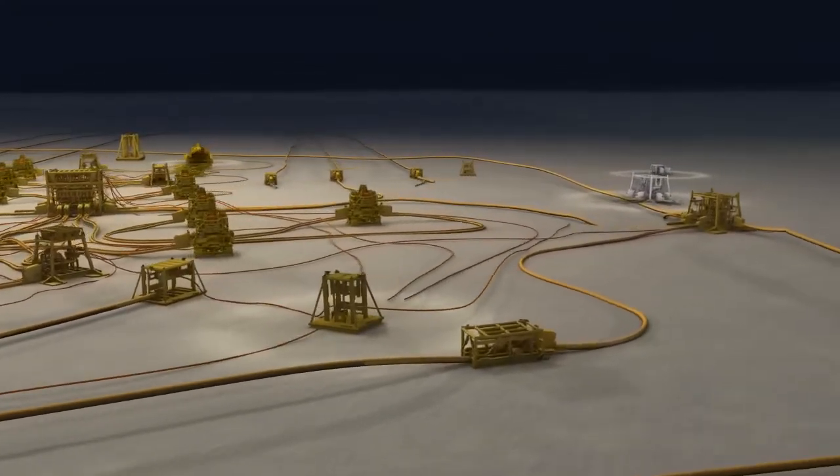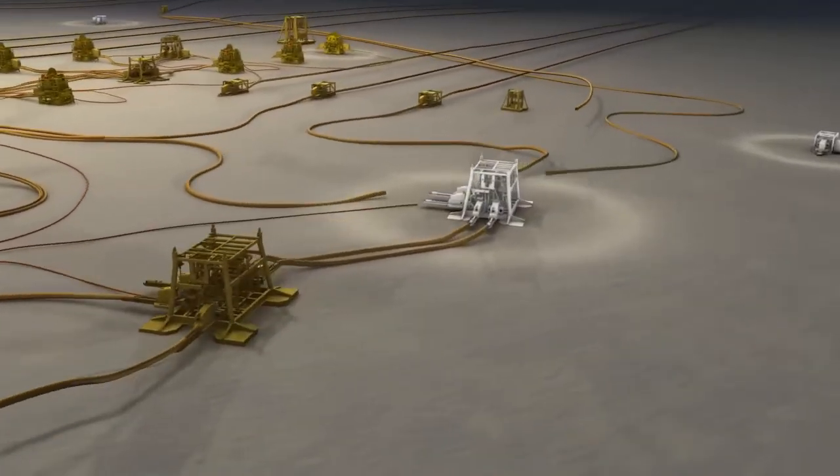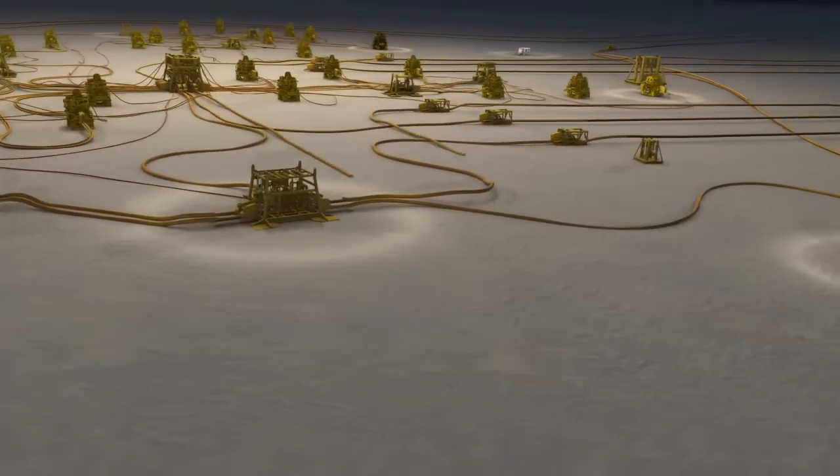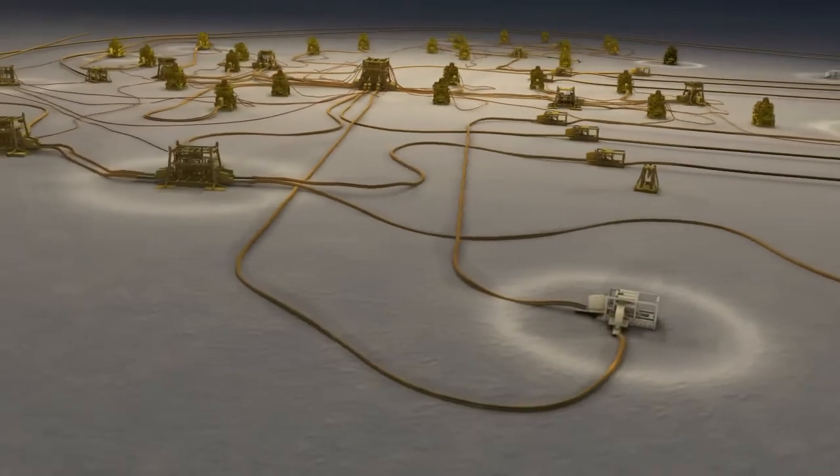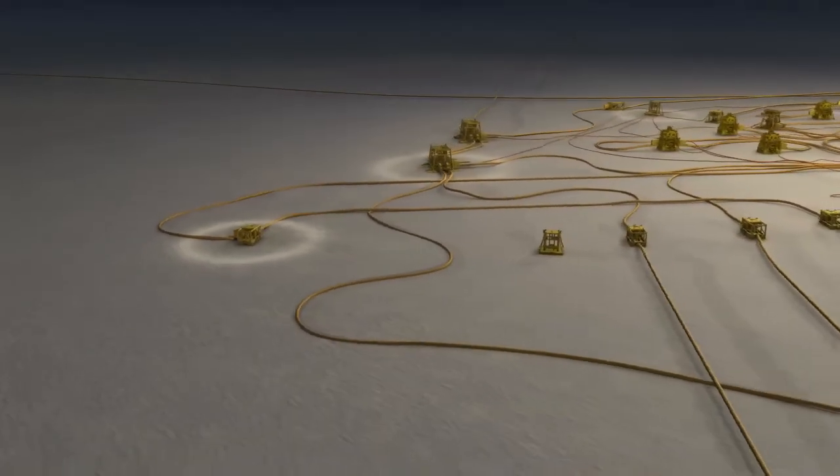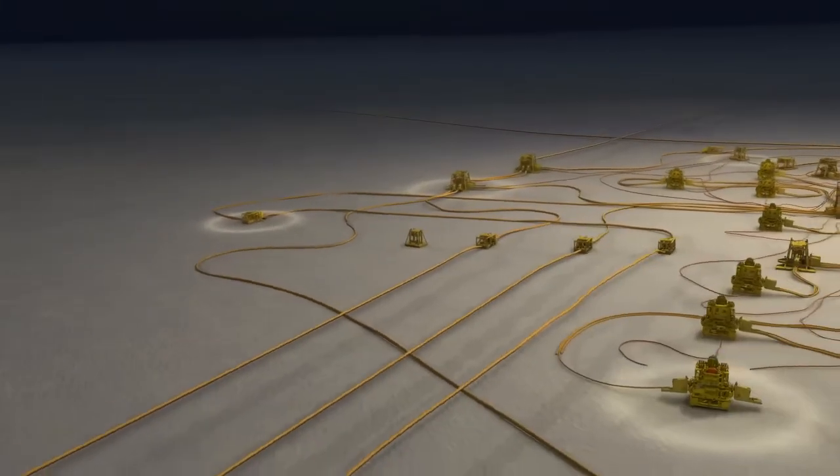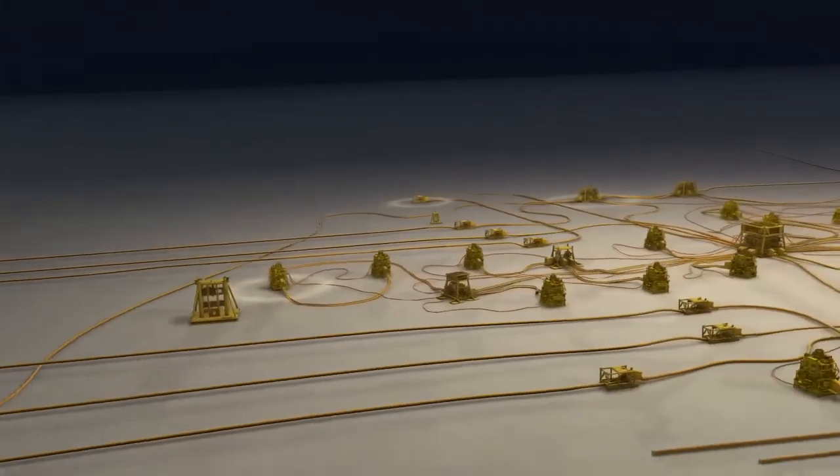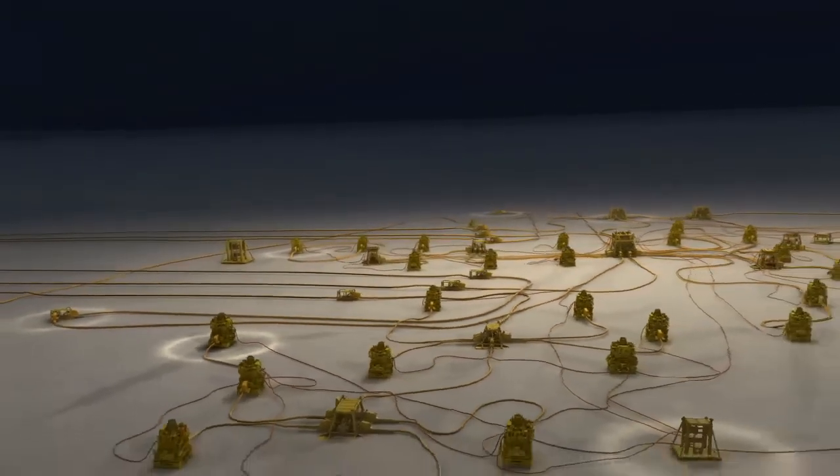Each drill center will have a range of new facilities, including new manifolds to manage the flow from the trees, flowline termination assemblies to act as a valve interface between the flowline and the drill center, and umbilical termination assemblies to distribute the electrical and hydraulic power to the various control systems.